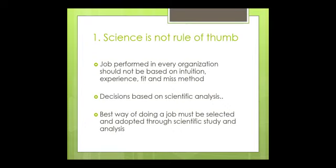What does 'Science not Rule of Thumb' mean? In an organization, managers describe rules and regulations based on their own knowledge and intuition, but that may not always be correct. Decisions based solely on experience or trial and error can also be wrong. So, any decision you take for your business should have a scientific reason behind it. You should analyze the rules and regulations scientifically and then implement them — that is what Taylor teaches.